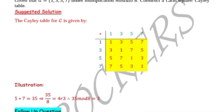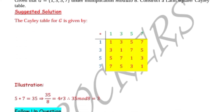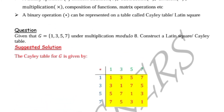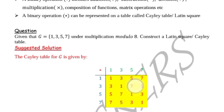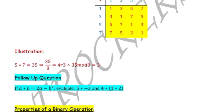Then 7 star 5 gives us 3. Seven multiplied by 5 gives us 35, then 35 divided by 8 gives 4 remainder 3. Therefore 3 is the answer we write in our Cayley table. That is how you get all these elements in the Cayley table.